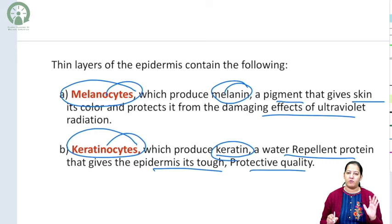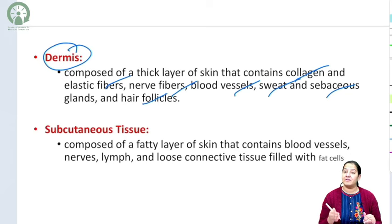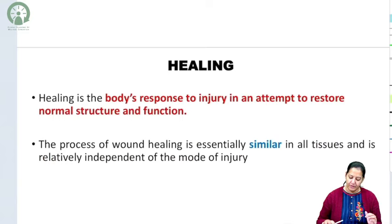Just below the epidermis is the dermis. Inside the dermis there are multiple collagen fibers, elastic fibers, nerve fibers, blood vessels, sweat glands, sebaceous glands, and hair follicles. Just below the dermis is the subcutaneous tissue, which is made up of fat.